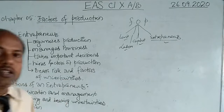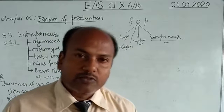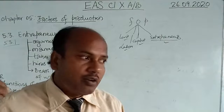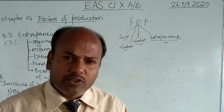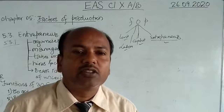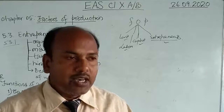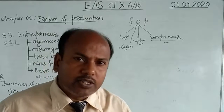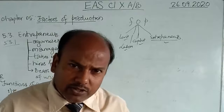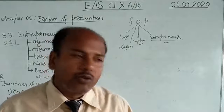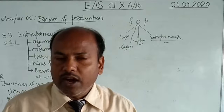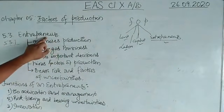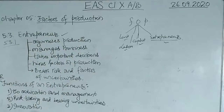Uncertainties refer to unseen factors and problems. For example, a government policy introduced in the future may go against your business. Or if you have produced a lot but there is a landslide and the road is blocked, that is a factor of uncertainty you did not know about. You then have to take an important decision — whether to stop production or divert transportation. The person who takes these decisions is the entrepreneur.